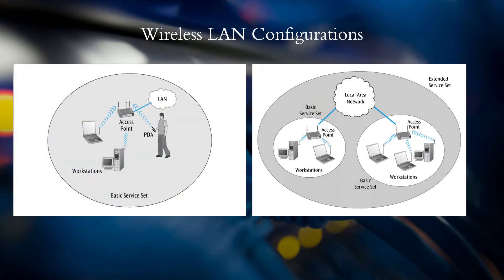The first configuration is the basic service set or BSS, shown in the left picture. It is a single-cell LAN which has an access point at the center of the cell. All user devices communicate through the access point.